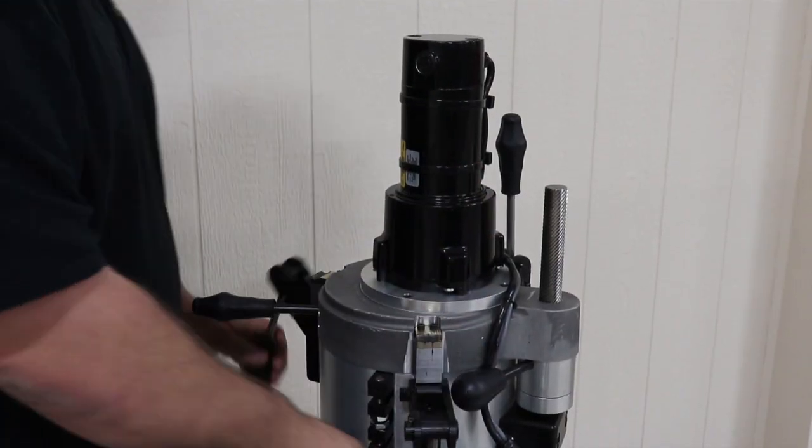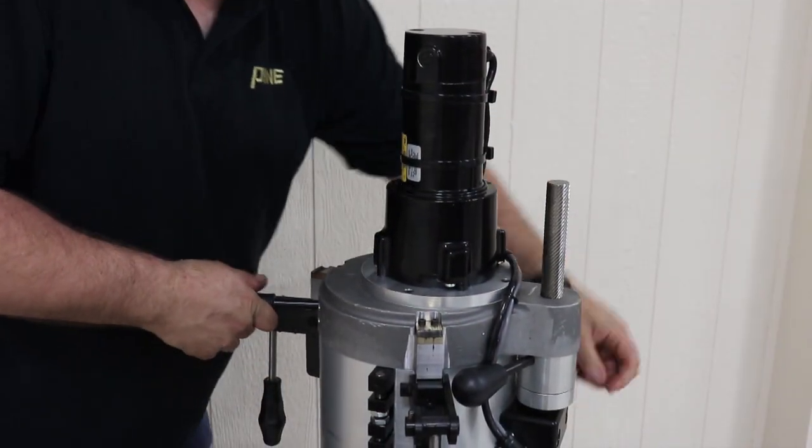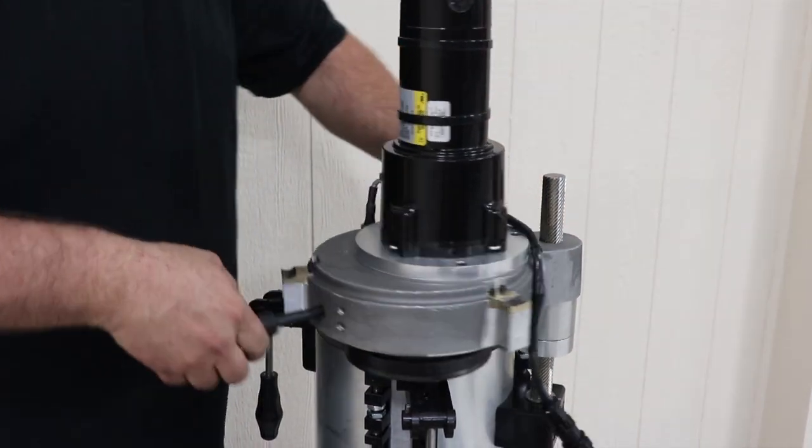Begin by unclamping the gyratory head from the body. Raise and rotate it out of the way.